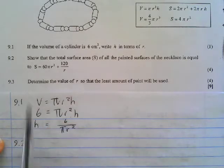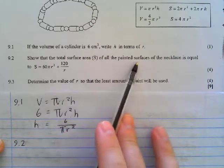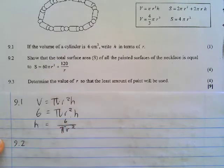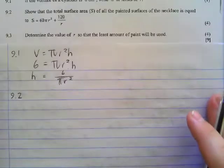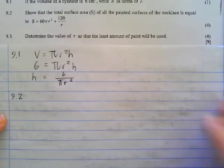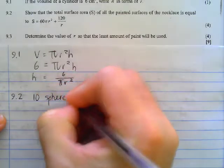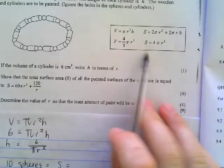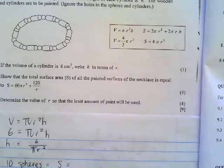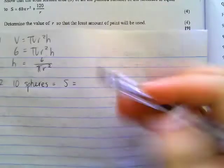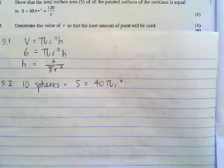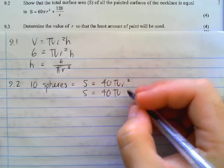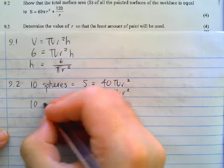9.2 asks for the following: Show that the total surface area S of all the painted surfaces of the necklace is equal to that. So we know where we're heading, but we need to obviously show the workings to get there. For this question, we're going to break it up into the 10 spheres and the 10 cylinders. So for the 10 spheres, the surface area of 10 spheres would be 4 pi r squared. So now that we've got 10 spheres, it's going to be 40 pi r squared because 10 times that 4 that was in the front. Surface area is equal to 40 pi r squared.